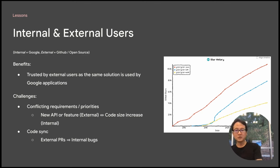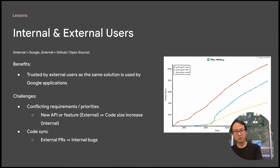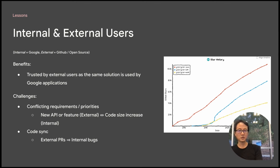That's all the background I want to cover. Now I'll talk about what we learned from the past four or five years after we launched this project. First, we made a decision that this solution has to work for both Google's own internal applications and also for external applications — applications built using the GitHub open-source releases. What we noticed is this is a very significant benefit for many users, because they trust that this solution also works for Google, and they're more confident to use it in their own production solutions.